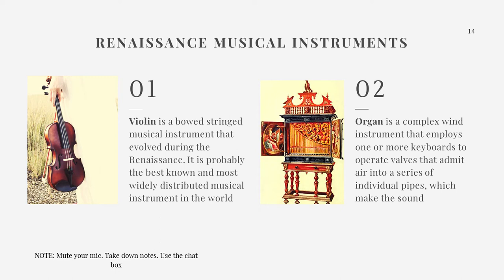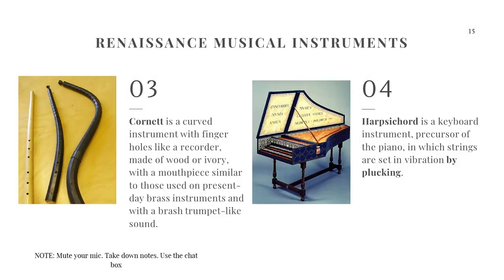The organ is a keyboard instrument, but unlike the piano where strings are struck, the organ works by pressing keys that release air to blow through pipes, which produces the sound. That is why it is called a complex wind instrument — it is played like a keyboard but also functions like a wind instrument. Third, we have the cornet, which is a curved instrument with finger holes like a recorder, usually made of wood or ivory, with a mouthpiece similar to present-day brass instruments and a bright trumpet-like sound.